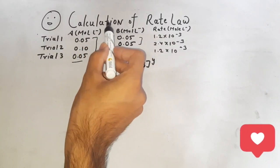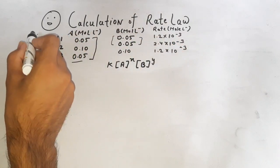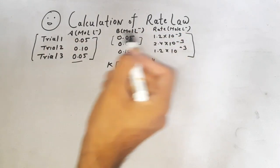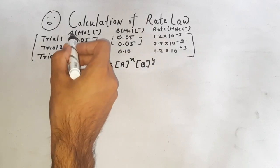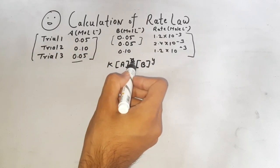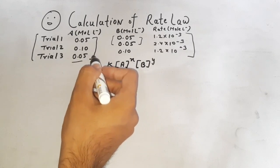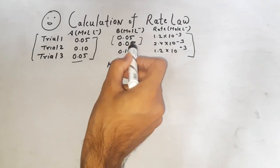Hello friends, today we learned the calculation of rate law from tabular forms. First of all, we find the value of x and y for rate law. For x, we assume that b is constant.